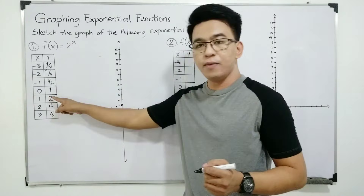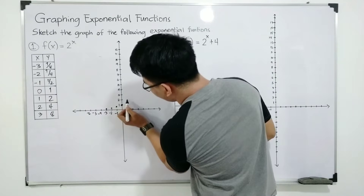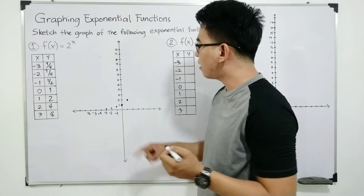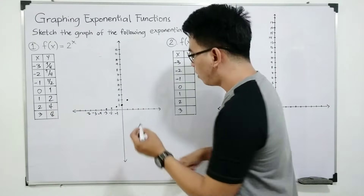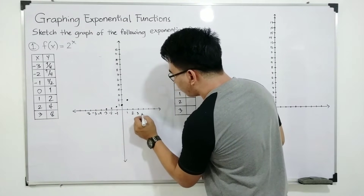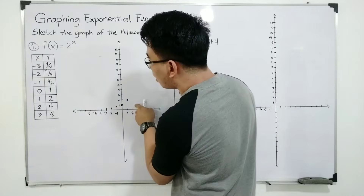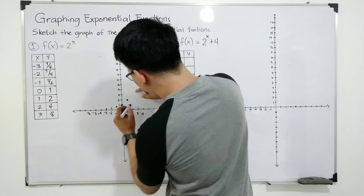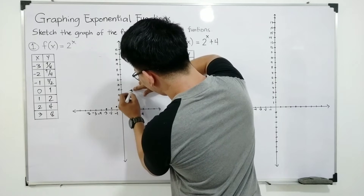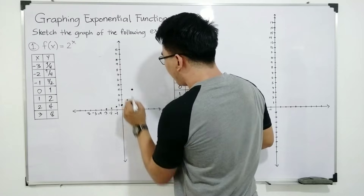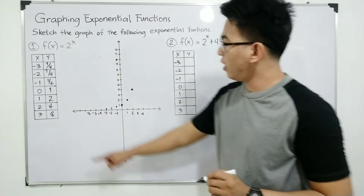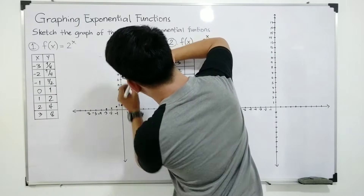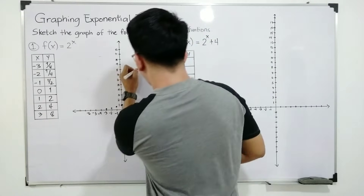Next, we have 1 comma 2. This is 1 and this is your 2. That is the fifth point. Next, we have 2 comma 4. This is 1, 2, 3, 4. This is 2, tapos hanggang 4. This is your 2 comma 4. Kaya dapat tama rin yung pagkaka-plot. Followed by 3 comma 8. For 3, ito yung 3 natin. And then your 8 is here. Nandito yung ating last point.